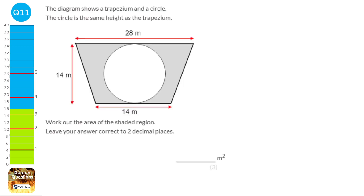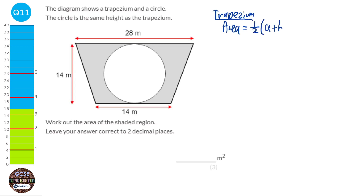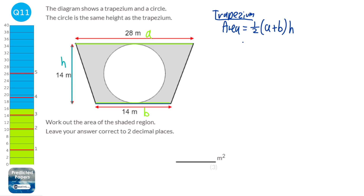First we work out the area of the trapezium. The formula is half times (a plus b) times h, where a and b are the parallel sides and h is the perpendicular distance between them. The area is half times (28 plus 14) times 14, which equals 294.